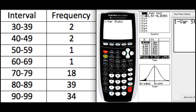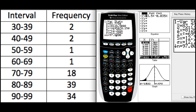So click on stats, then click on calc, and then click on one variable stats, enter. Remember, the ones that we want is L3 and L4, so go ahead and do second L3, second L4, and then just click enter. Beautiful.